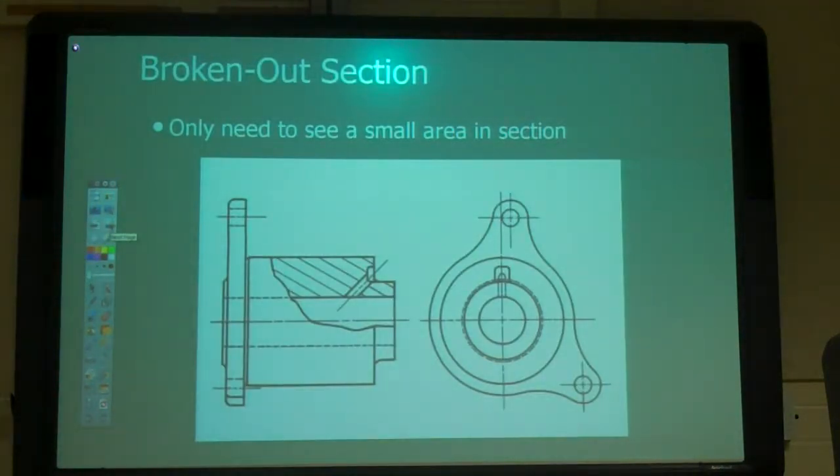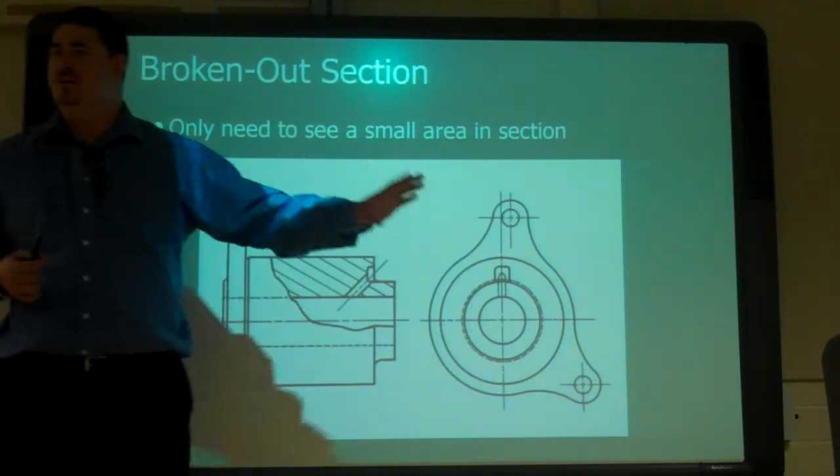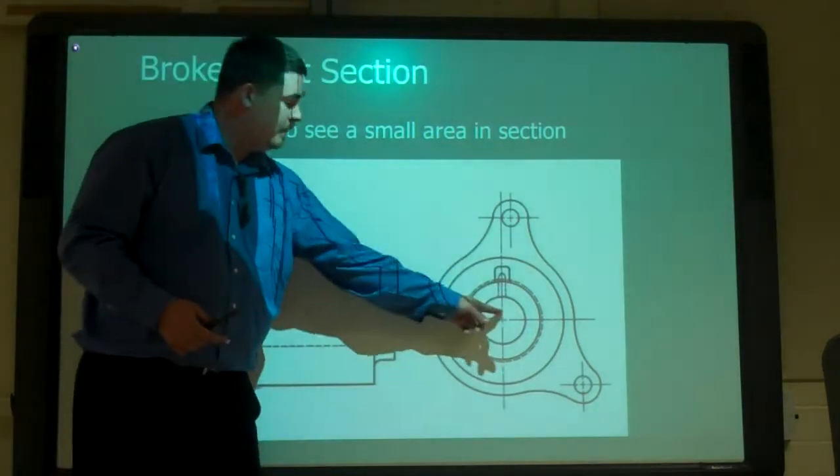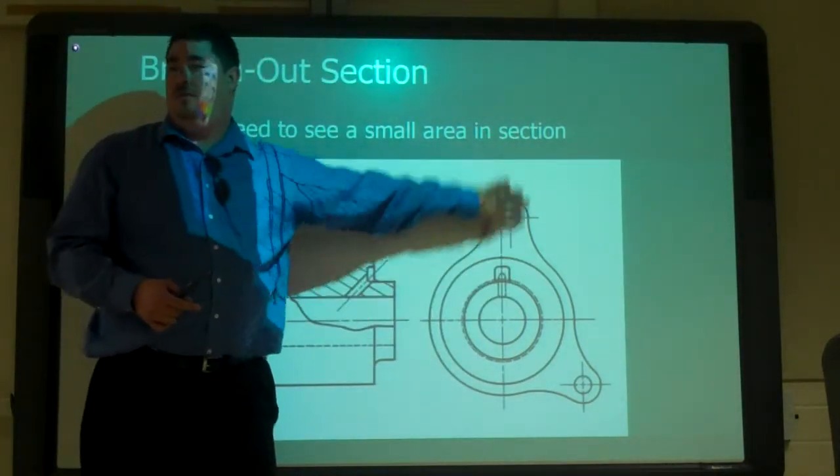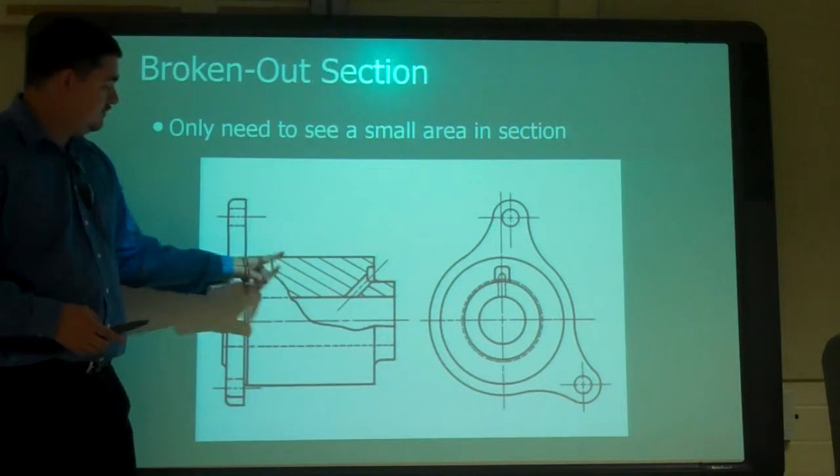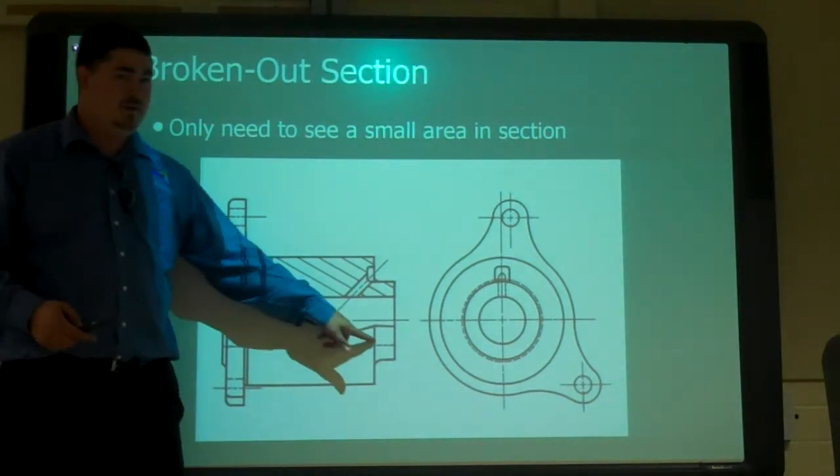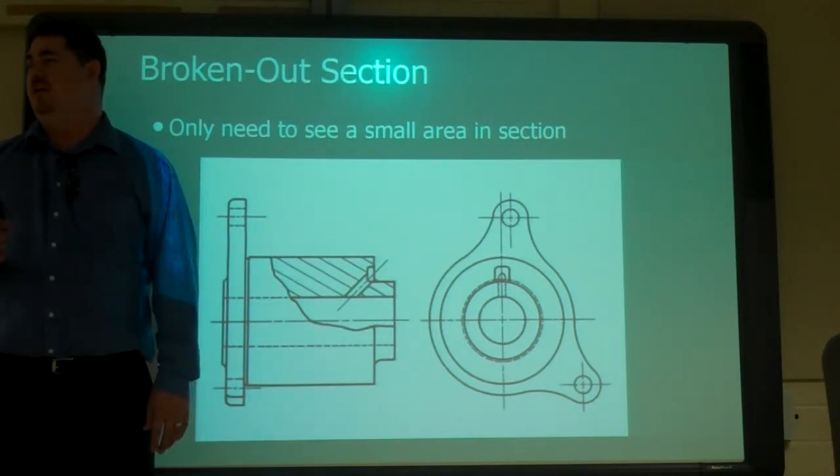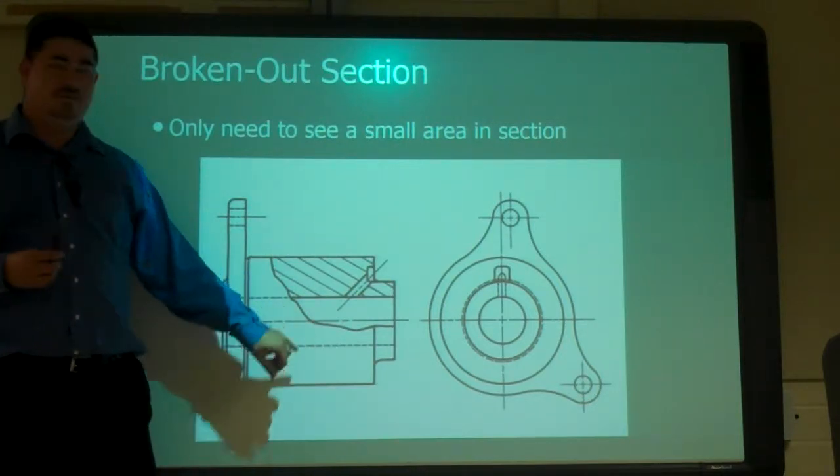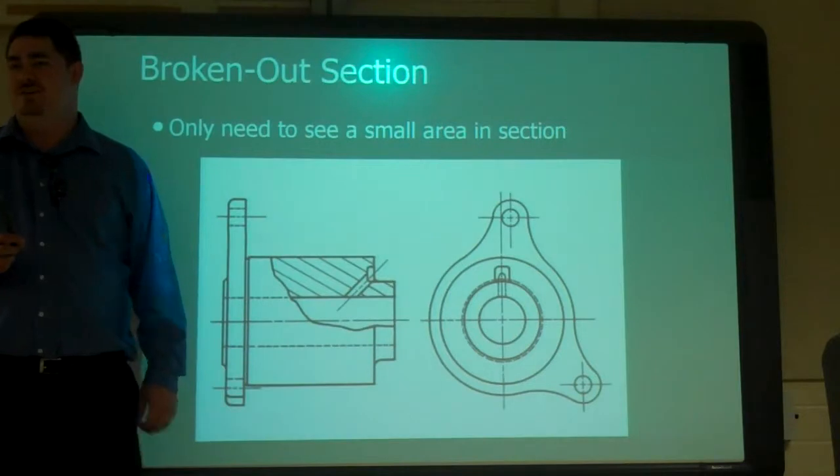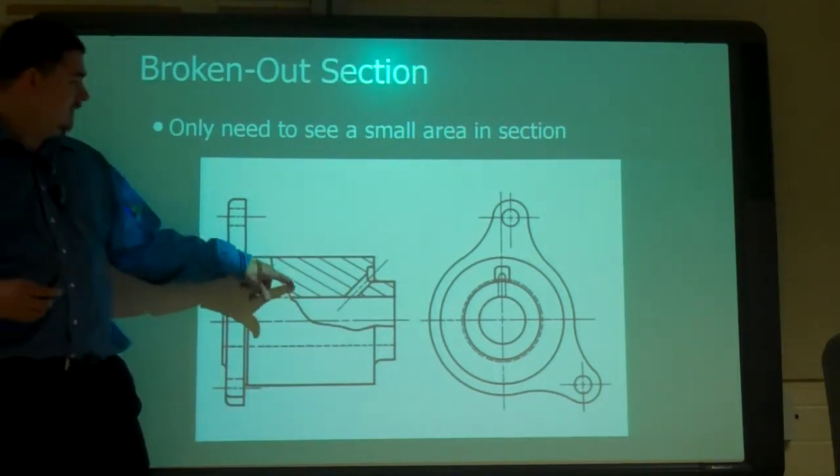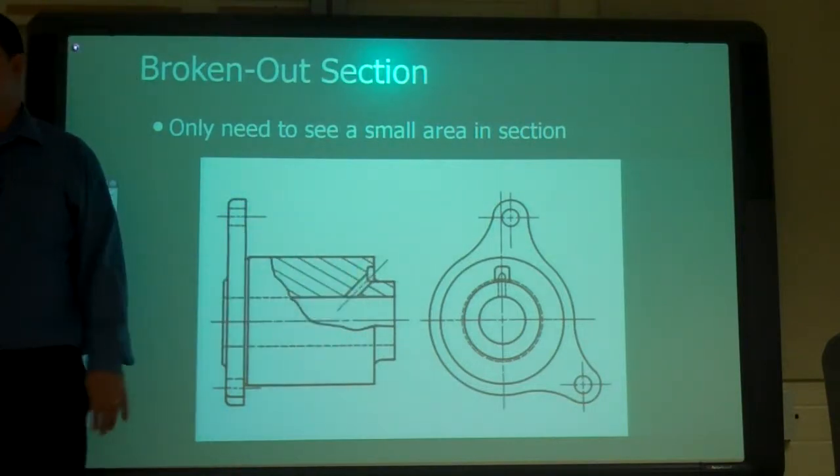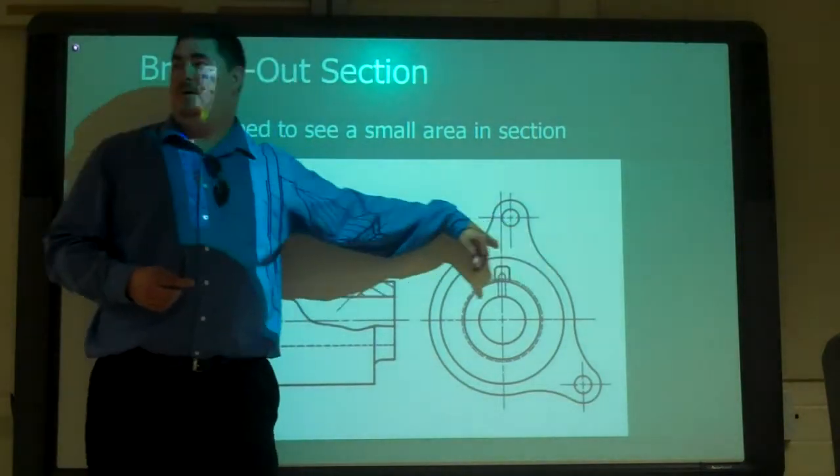So a broken out section is kind of like a half section where we want to section just part of it. But here, instead of doing a section line and cutting out the whole half of it, what we're doing is just draw the squiggly line. What's the squiggly line called? What kind of break? A short break, right? And is it thick or thin? Thick. So we draw a short break line. And then we just say that this part is our section. And we just pick however far back you want a section.